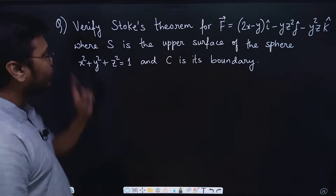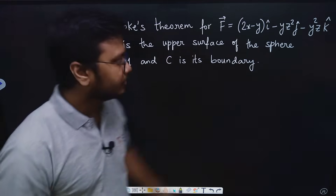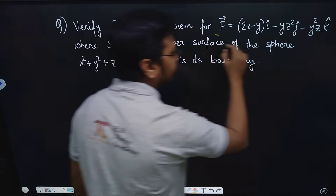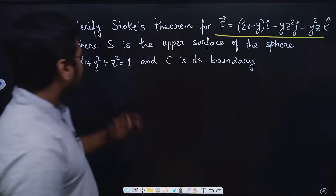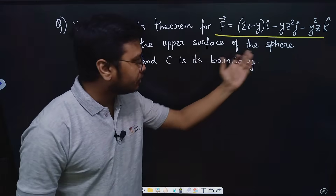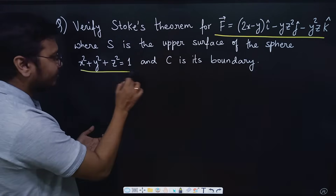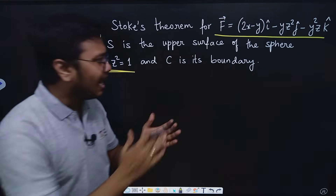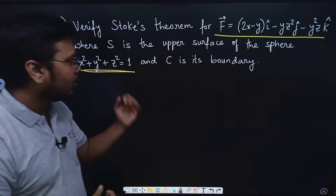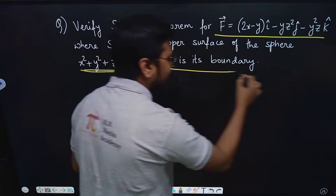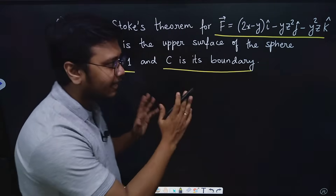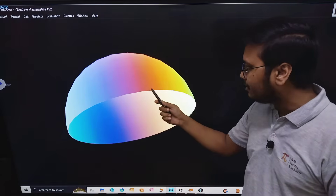Let's look at a problem: we need to verify Stokes theorem for a given vector function where S is the upper surface of a sphere — meaning we are dealing with a hemisphere — and C is the boundary of that hemisphere.